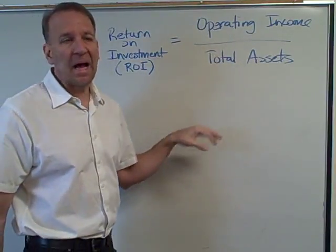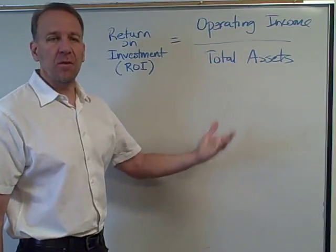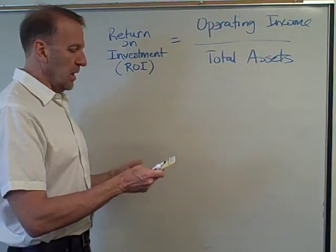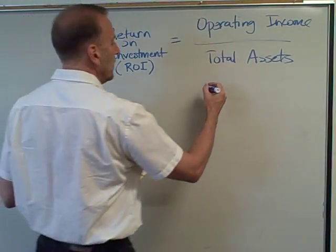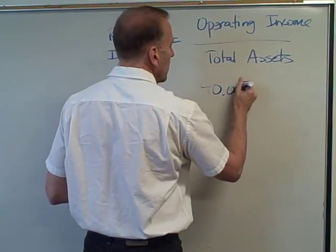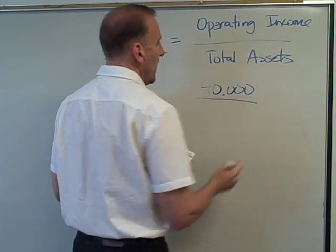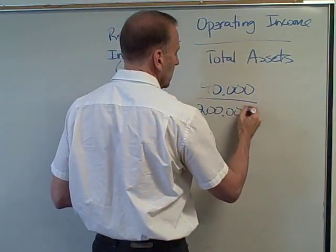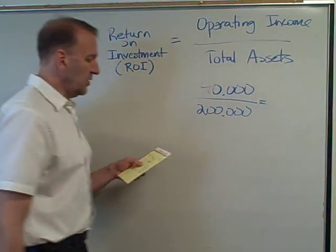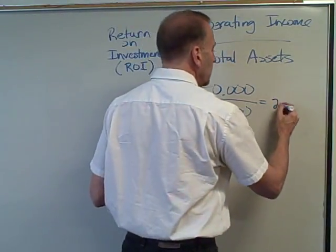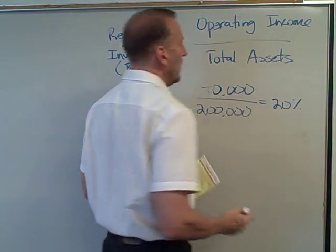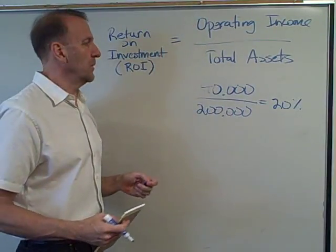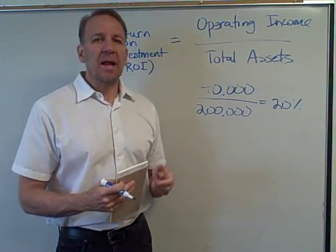In any problem you might have, they're going to give you this information or give you enough information to calculate these numbers. Let's do an example: our operating income is forty thousand dollars and our total assets for this investment are two hundred thousand dollars. In this case, our return on investment is twenty percent — our assets are generating a twenty percent return in operating income.